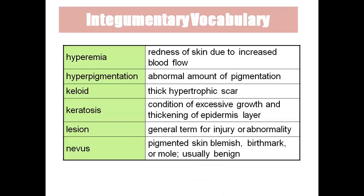Keloid is a thick scar — we call it keloid. Keloids are hypertrophic scars with bigger and thicker scar tissue. Keratosis means excessive growth and thickening of the epidermis layer; because the epidermis has more keratin, if there is more epidermis layer we call it keratosis. Lesion means any injury.